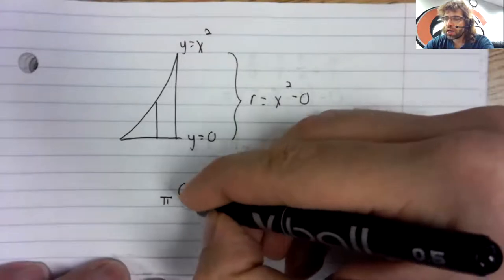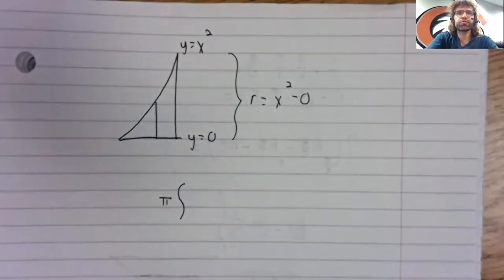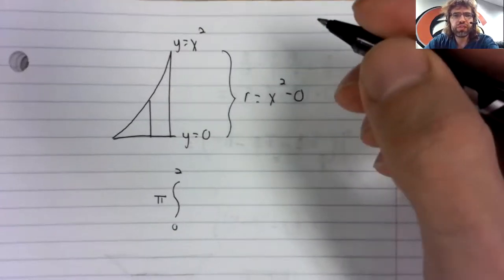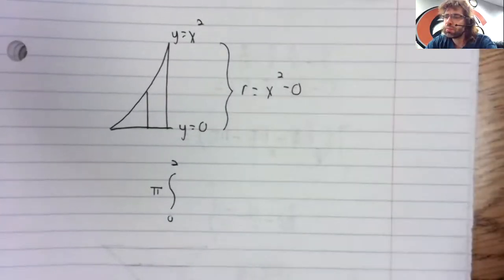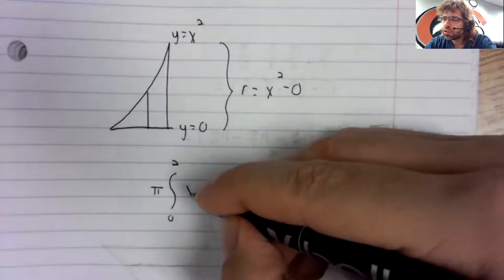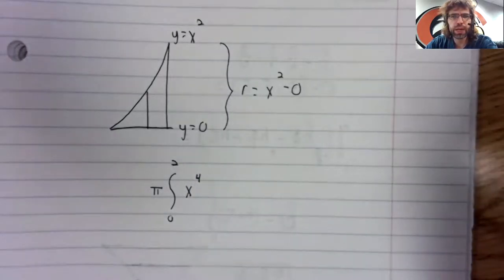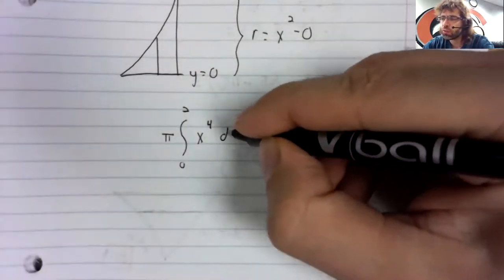The radius is x squared. And pi, the integral from zero to two, that's given in the problem. The radius squared, x squared squared is x to the fourth.